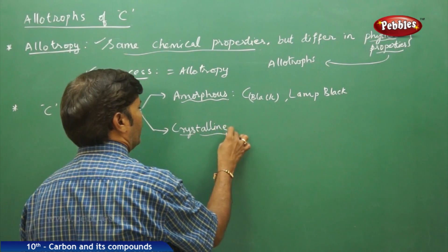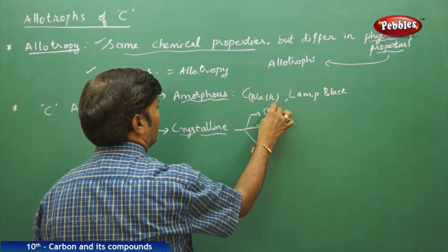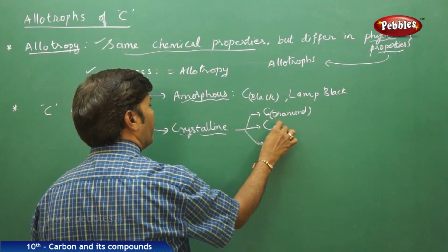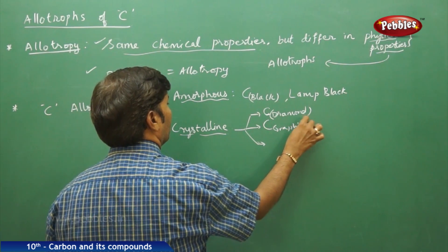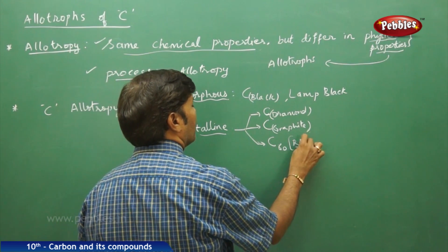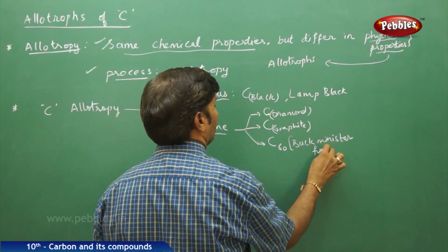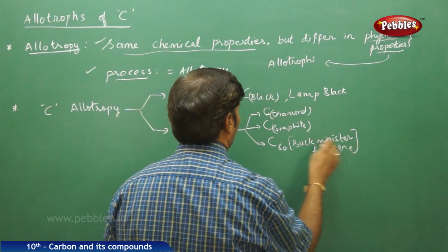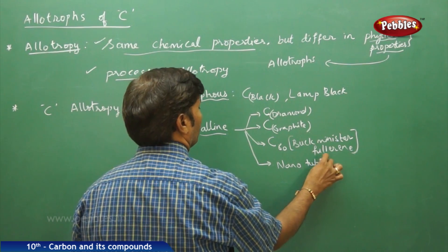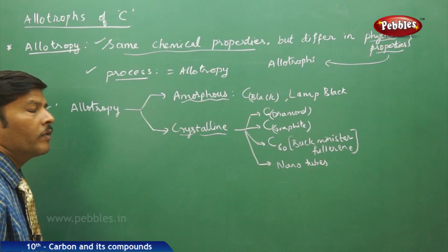If you go for crystalline forms, there are three different types for carbon: diamond, graphite, and carbon-60. Carbon-60 is also called Buckminsterfullerene. Sometimes there is also one more allotrope, that is nanotubes. These are the four different types of crystalline allotropic forms of carbon.